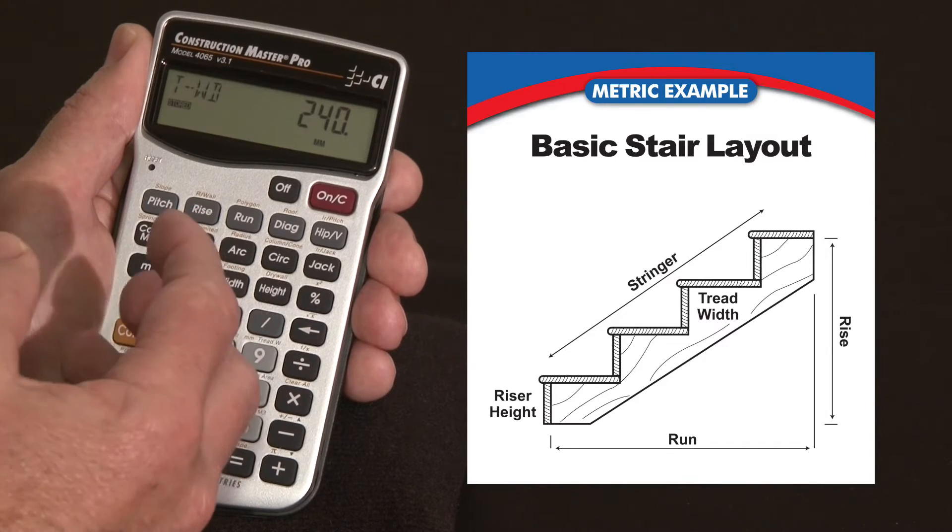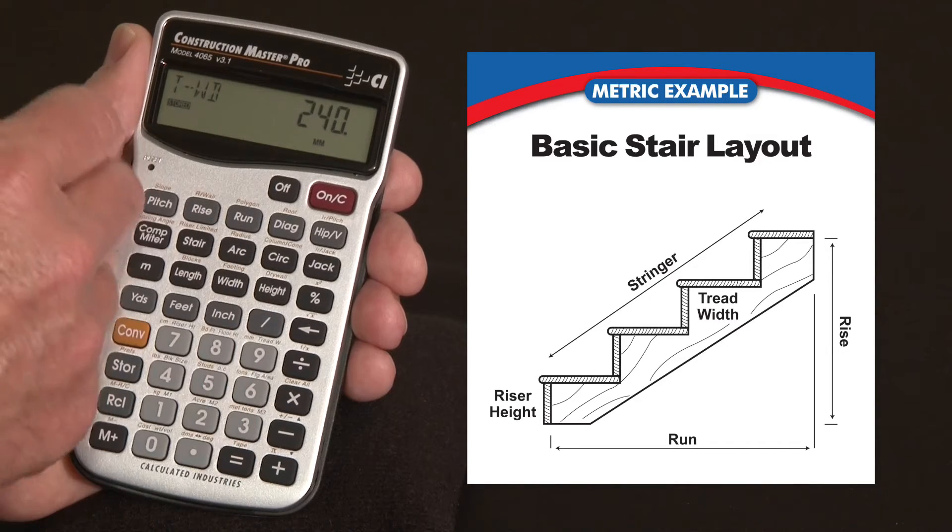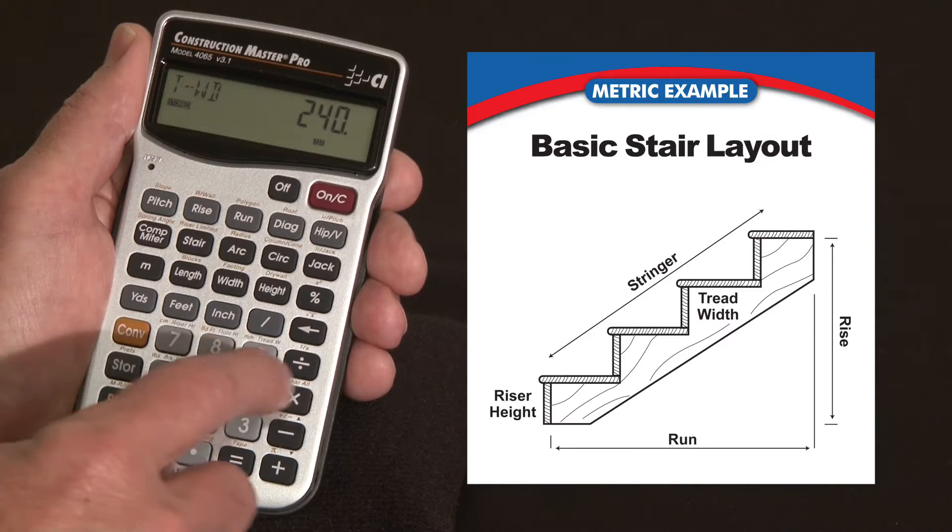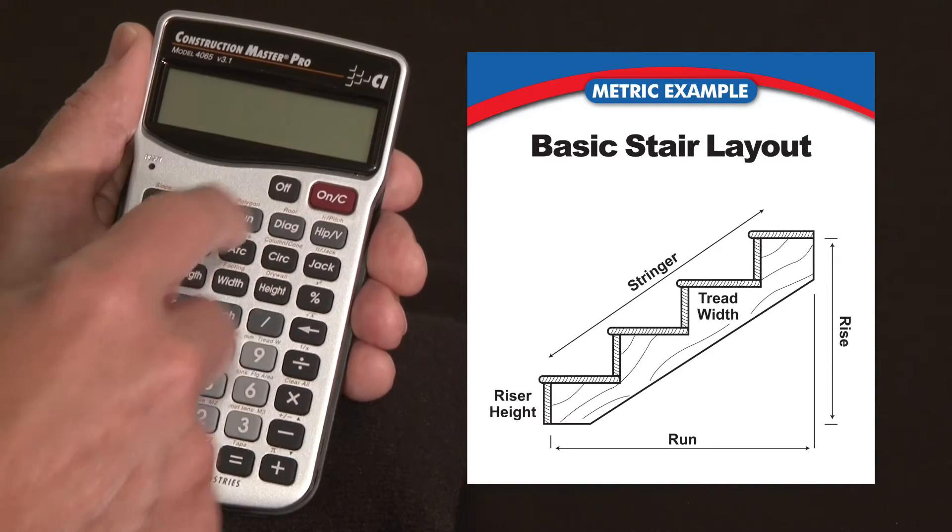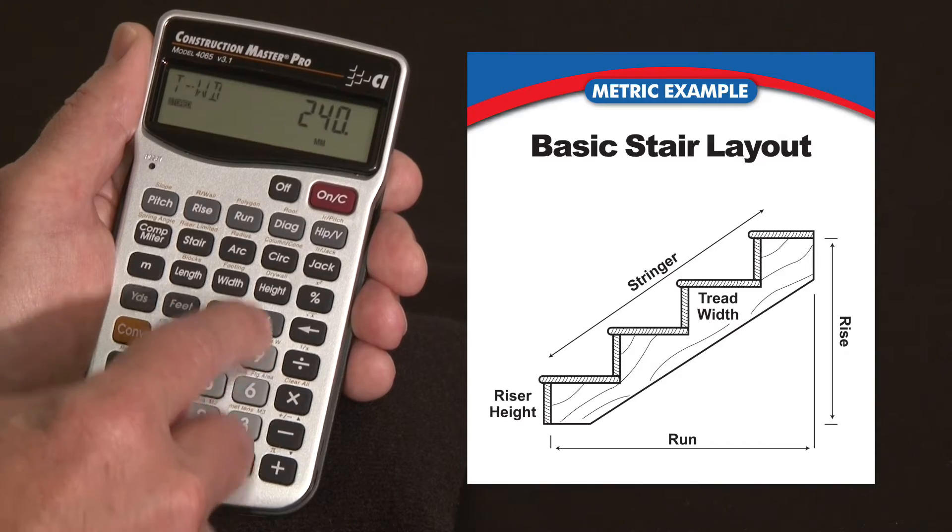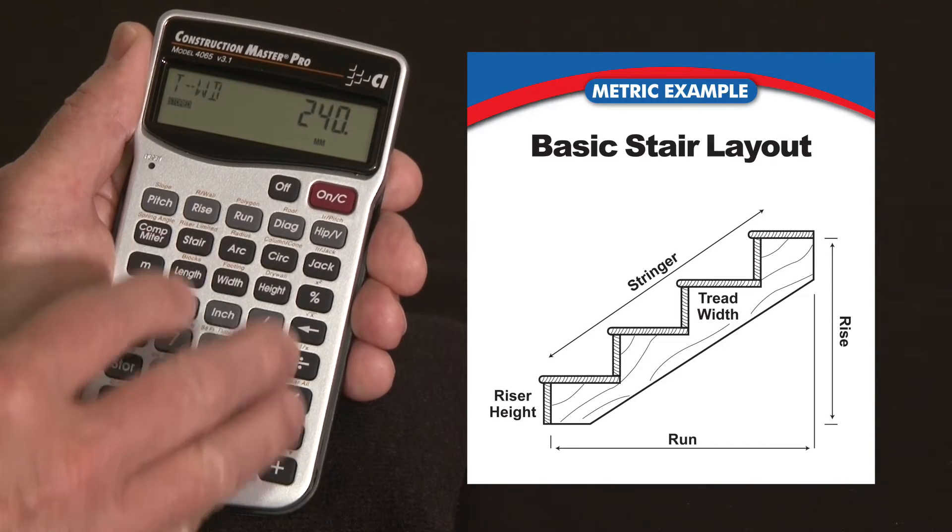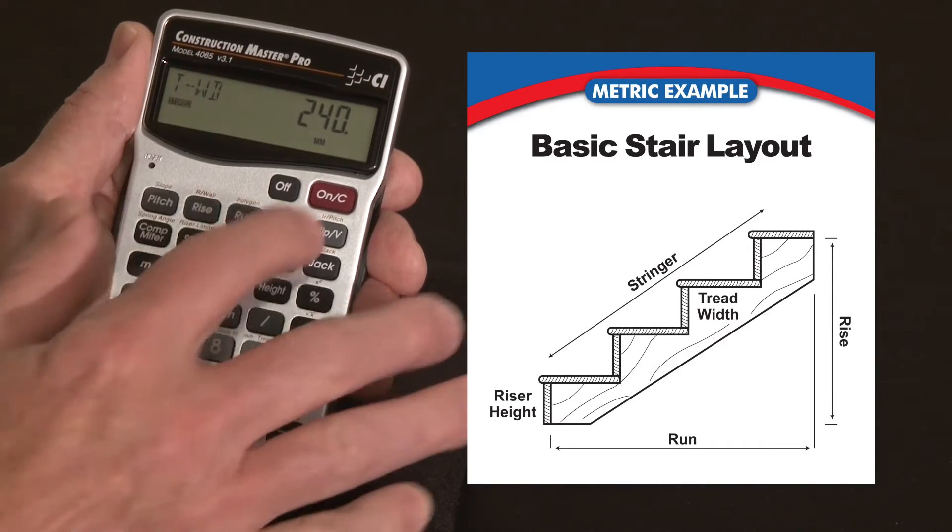So that will stay in there semi-permanently until you either pull the batteries out or hit convert all clear. But you can turn it off, come back a month from now, and these values will still be in there as you've stored them. So ordinarily you'd have those already done, so we're going to say that they're in there.